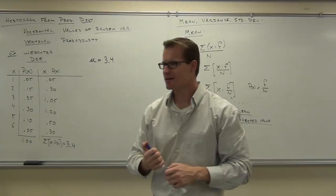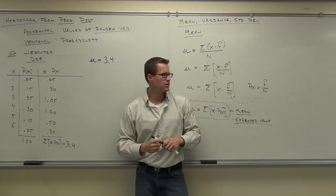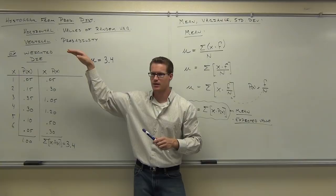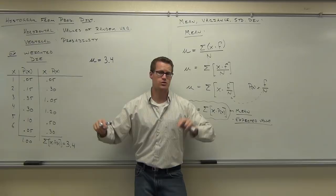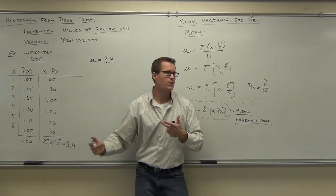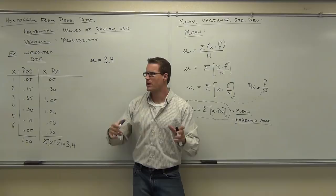Wait — can you get a 3.4 on a die? What does it mean that our mean is 3.4? It means that on average, over the long run, if you roll this die a billion times and average those results, you'll get 3.4. It's not a value on the die — it's between 3 and 4. This confirms our probability distribution: you should mostly be rolling threes and fours, with more threes than fours.